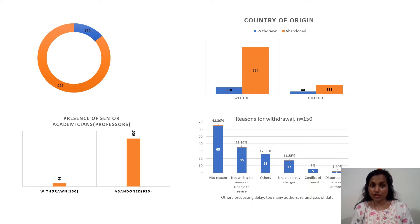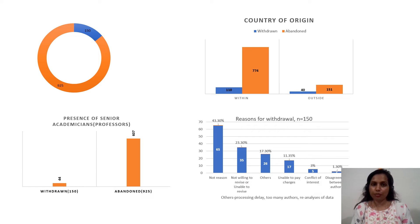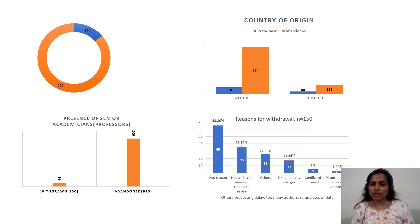The first feedback was actually decently timed and was sent within one and a half months, which is in line with our journal policy. But the withdrawal emails were written within a variable period of one to three months. Coming to the reasons for withdrawal for the 150 submissions, the majority of emails — comprising 43 percent — did not actually provide any reason.